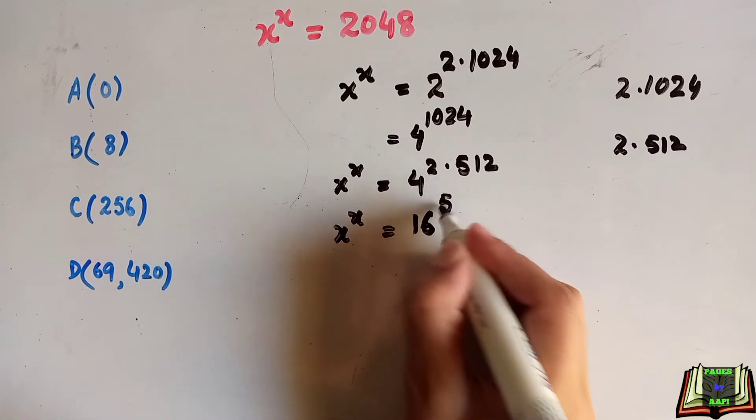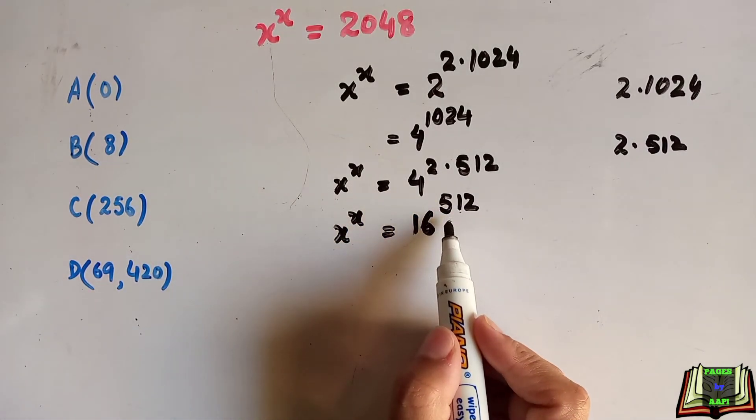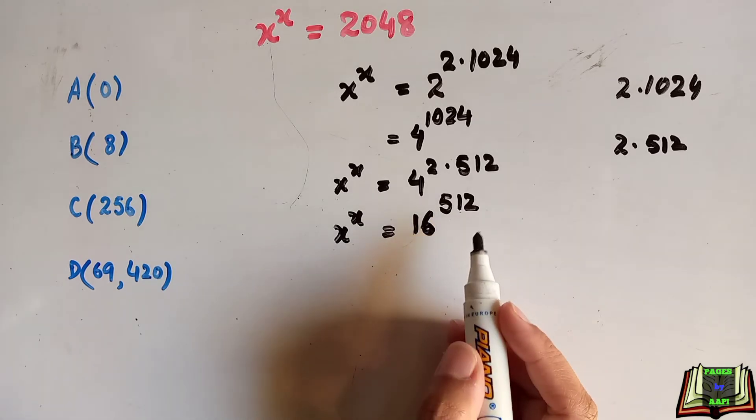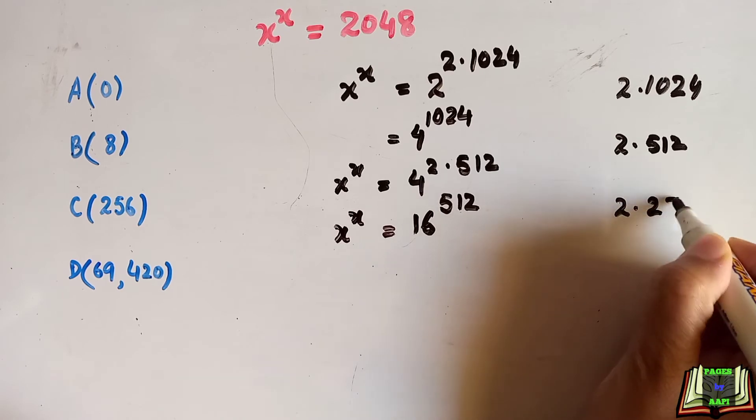the power 512. As it is, now again 512 can be written as 2 into 256. 512 is equal to